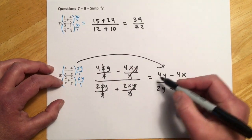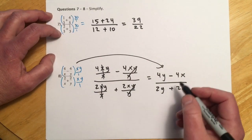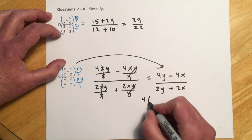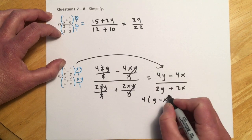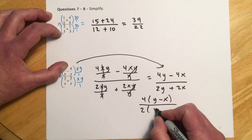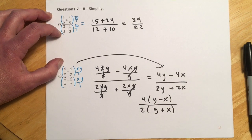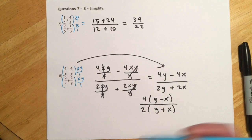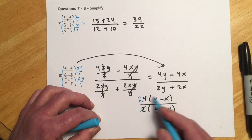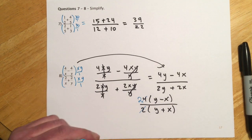This one is a little sneaky — there's factoring to do. Factor a 4 out front, and take a 2 out front on the denominator. That lets you reduce the 2 and the 4, so it becomes 2. The answer is 2(Y minus X) over (Y plus X).